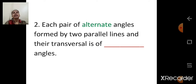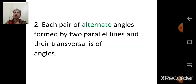Next: each pair of alternate angles formed by two parallel lines and their transversal is of how many angles? Alternate angles are also congruent. So the answer is congruent — each pair of alternate angles formed by two parallel lines and their transversal is of congruent angles.